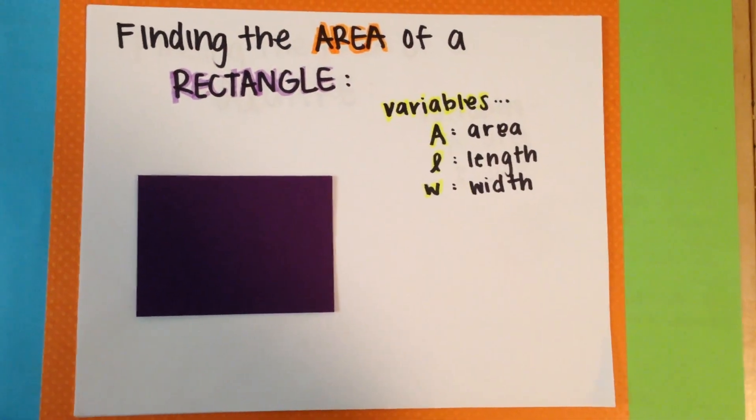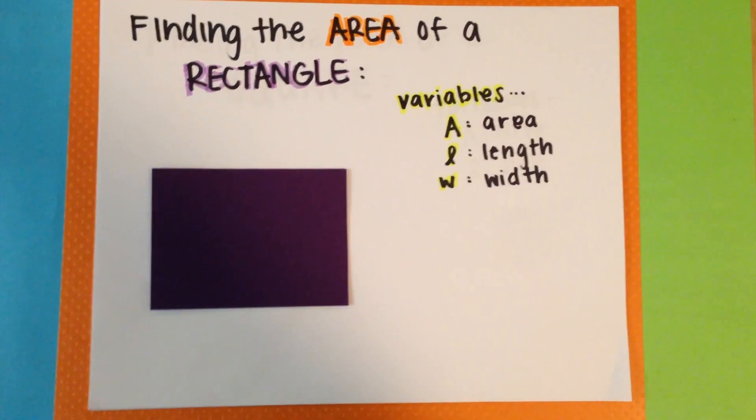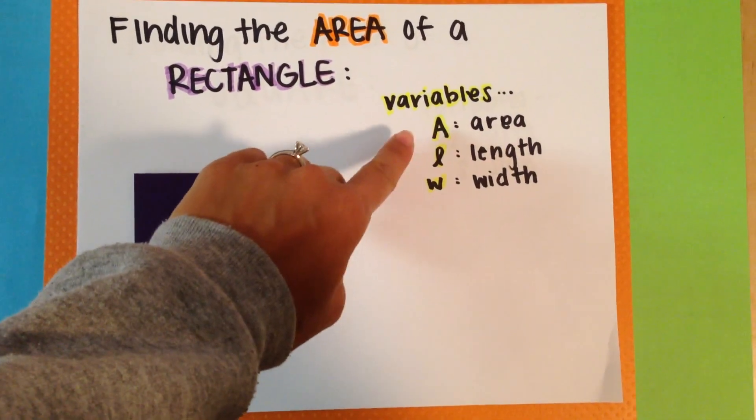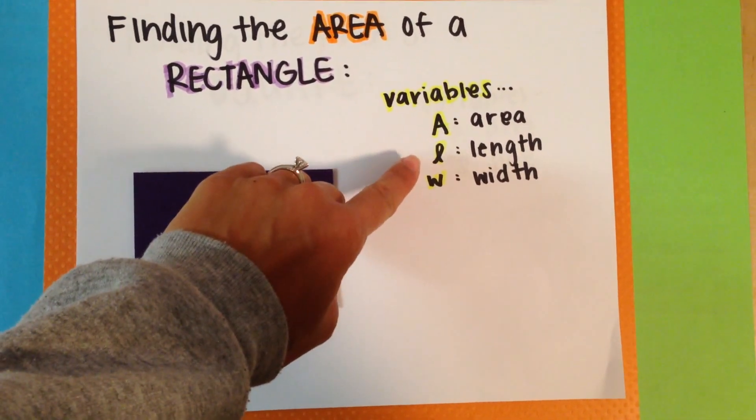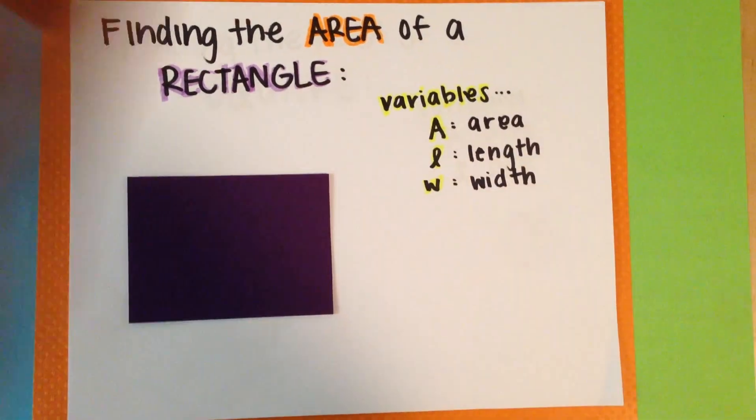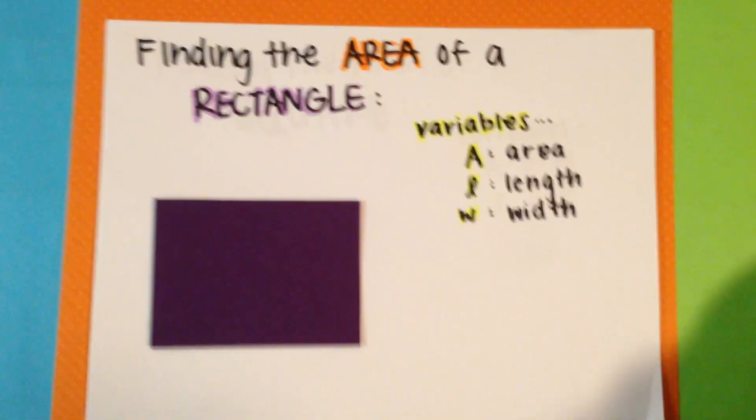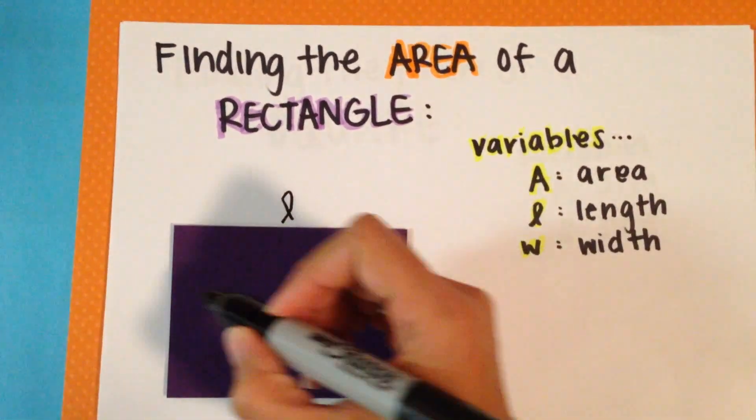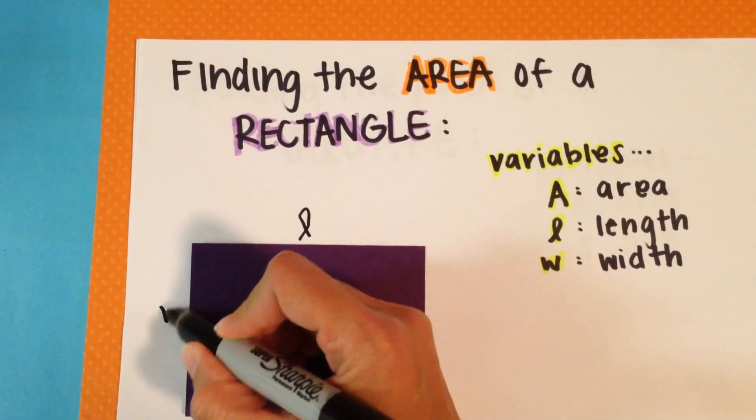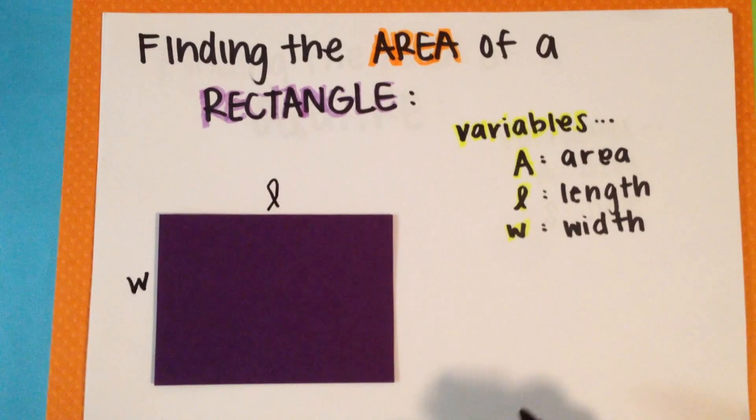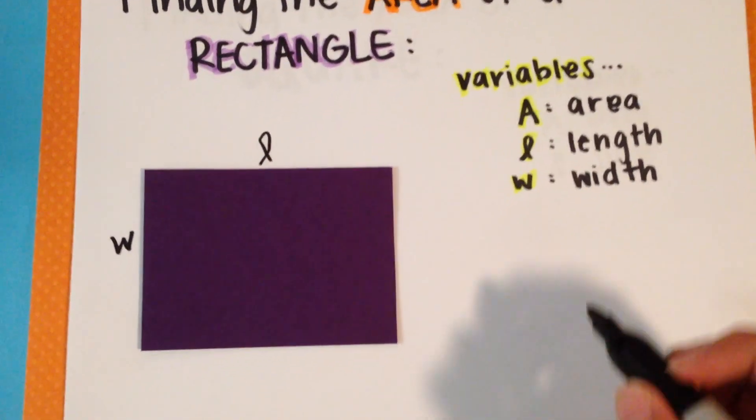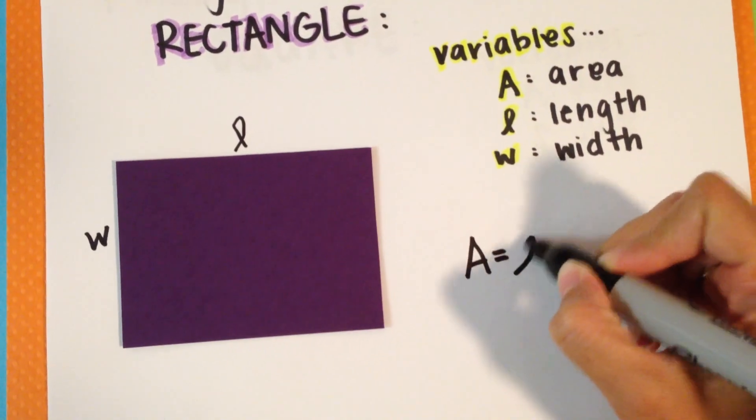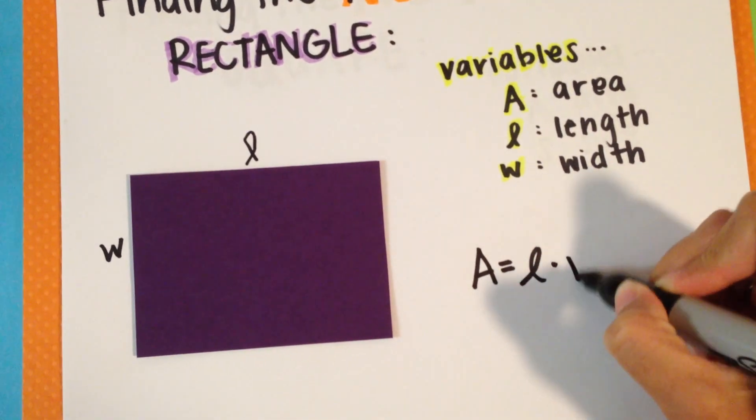So let's find the area of a rectangle. First, we need our rectangle and our variables. A will be area, L will be length, W will be width. We have our length on this side and our width on this side. The area of a rectangle is A equals length times width.